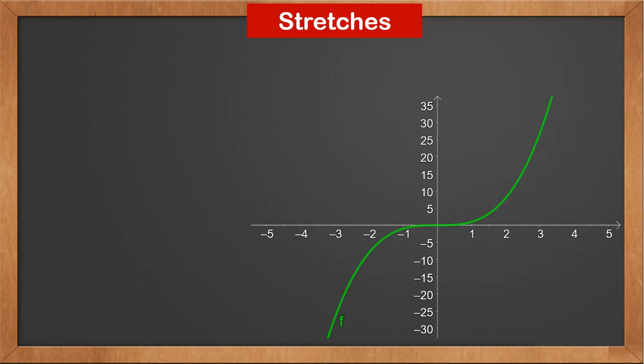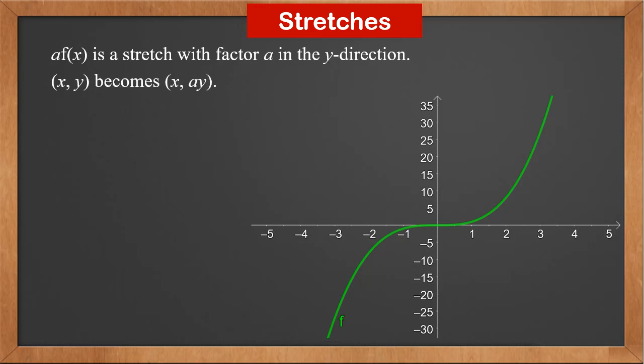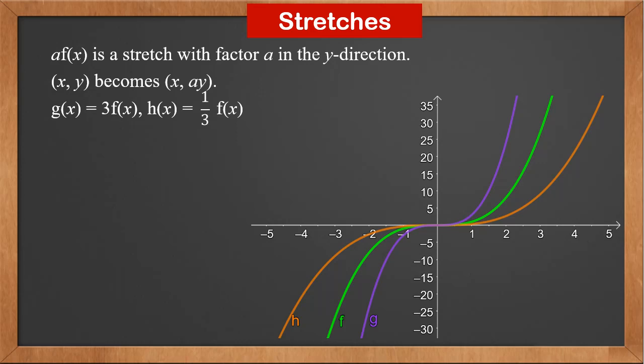a·f(x) is a stretch with scale factor a in the y-direction, because every point (x, y) in f(x) becomes (x, ay) in a·f(x). g(x) = 3f(x) and h(x) = ⅓f(x). We can see that g is f stretched with factor 3 in the y-direction, and h is f stretched with factor ⅓ in the y-direction, or compressed with factor 3 in the y-direction.